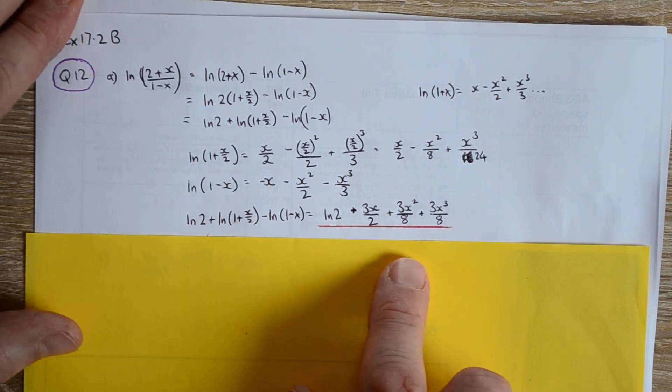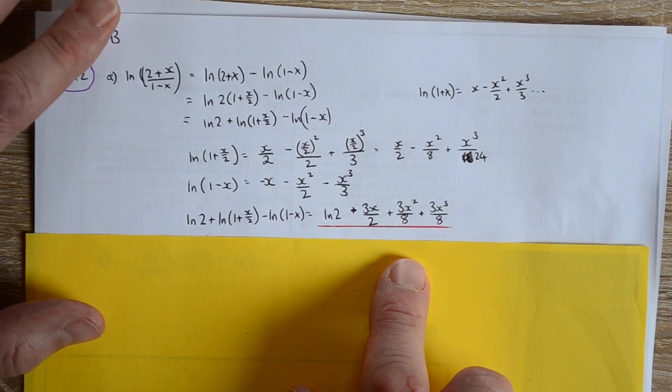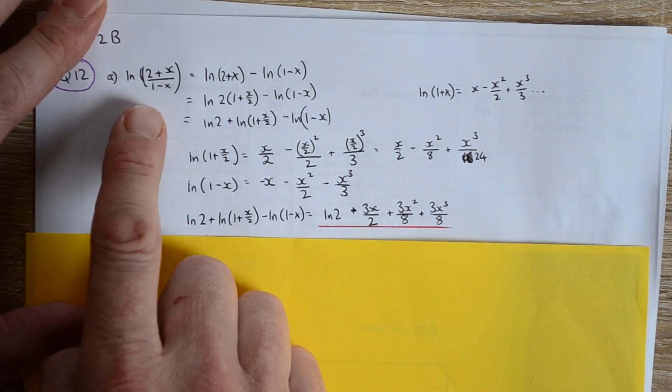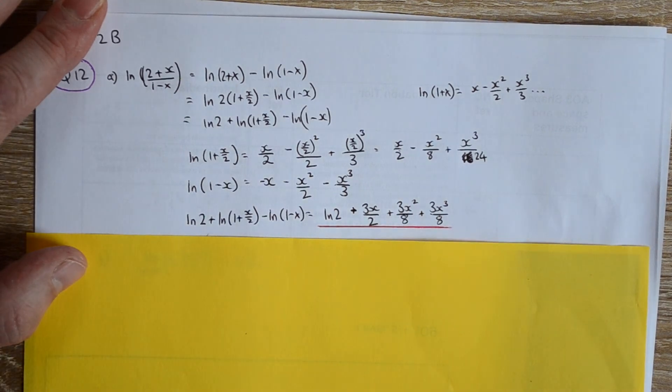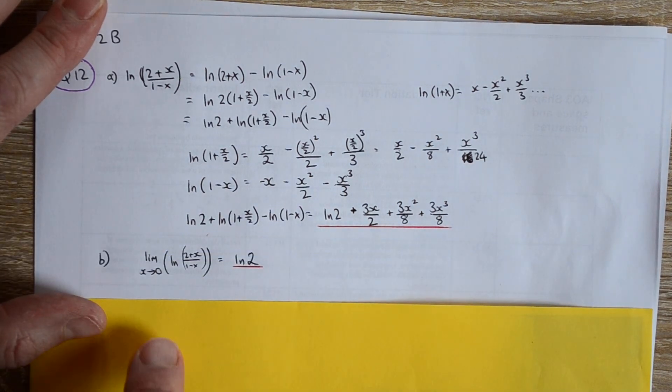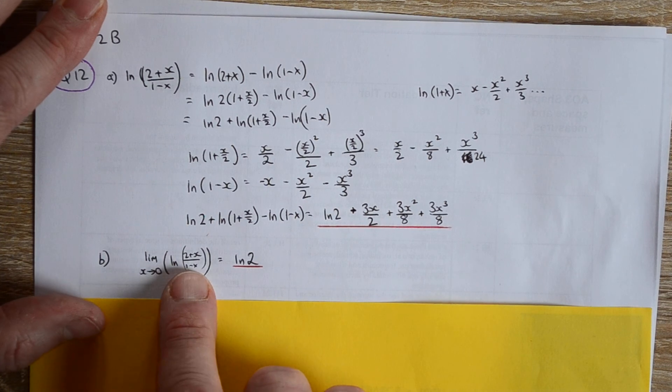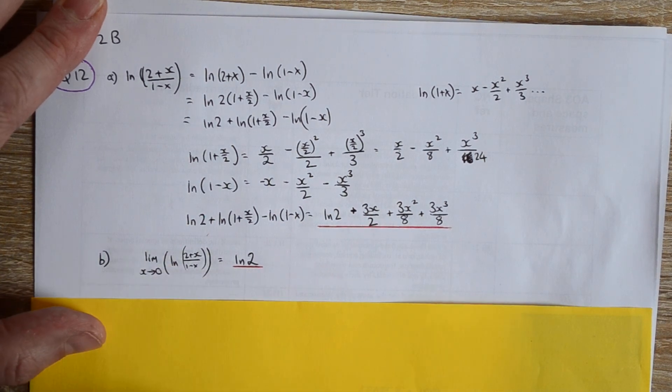So we can use the Maclaurin series expansion to find the limit of this function as x tends to 0, but we could just use the function and sub in 0 from the start and get the same answer.